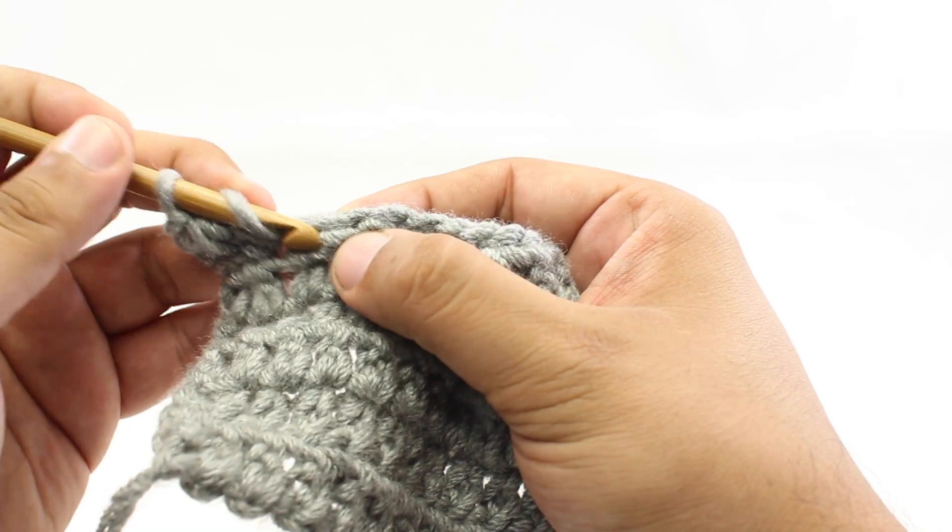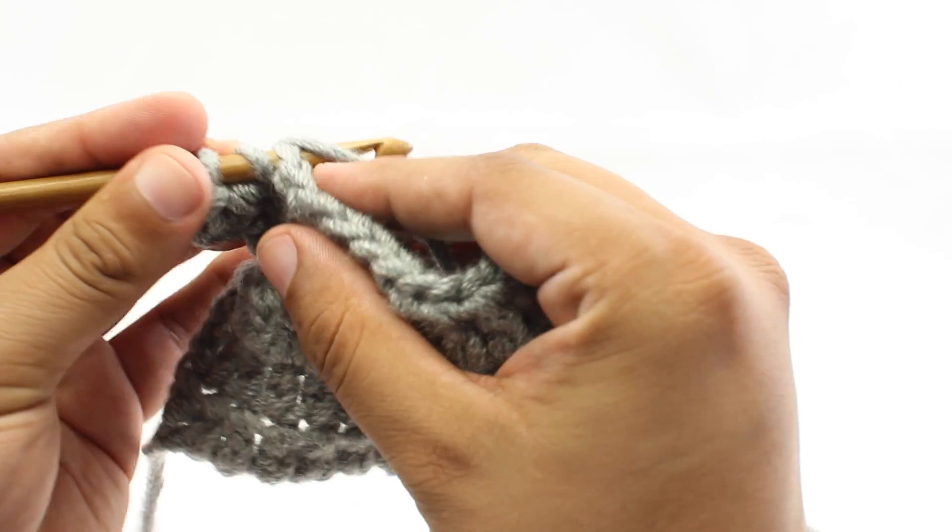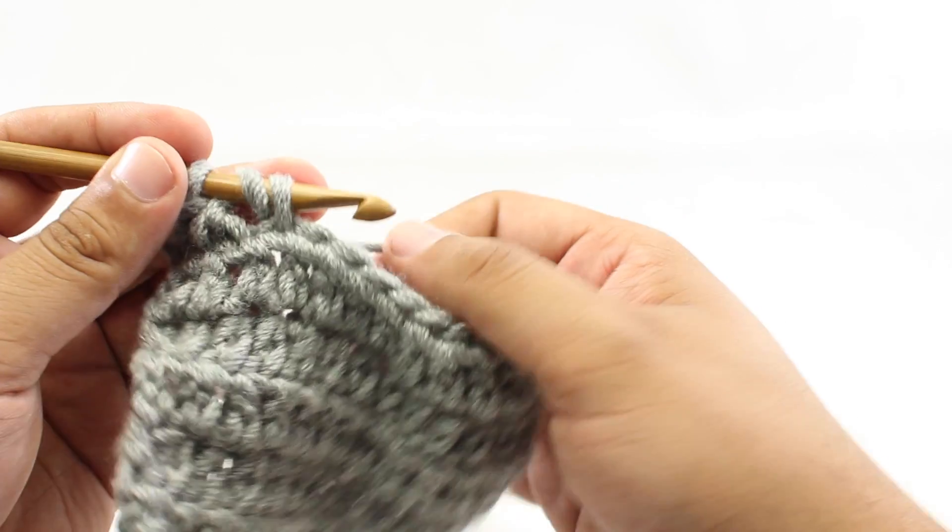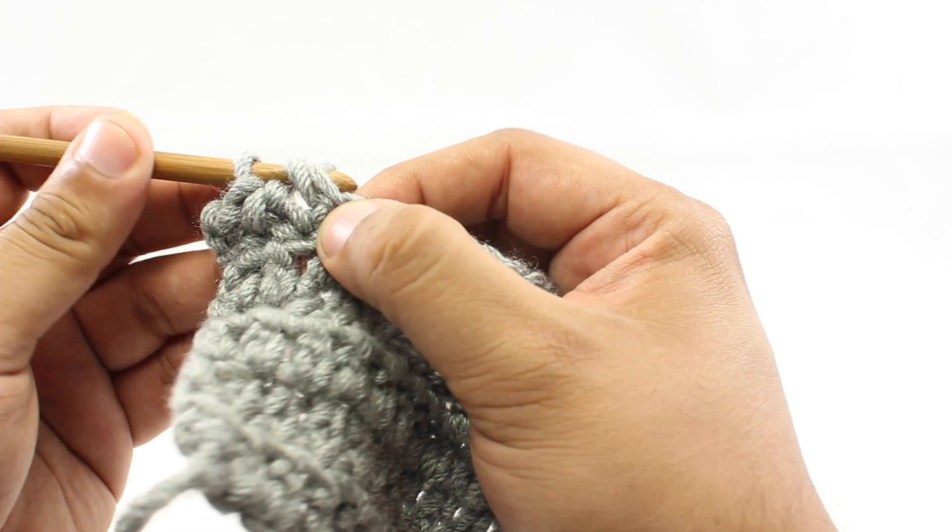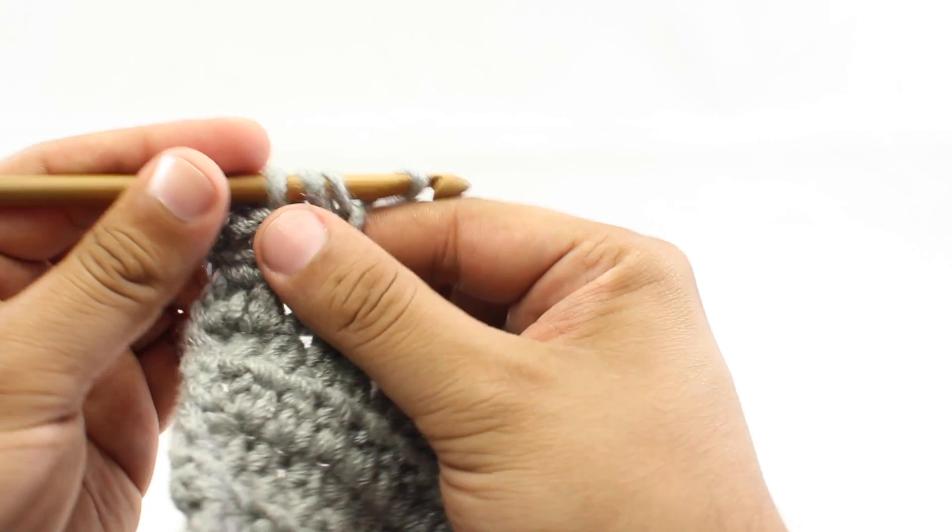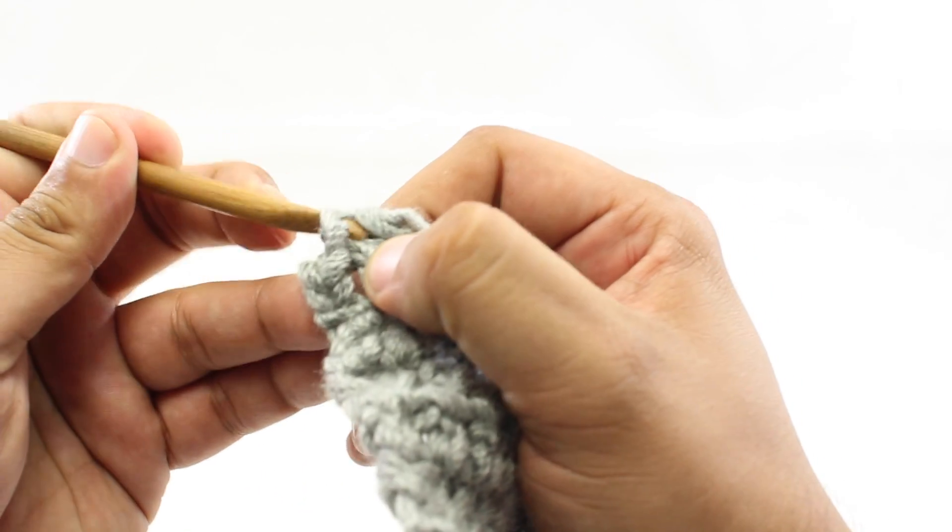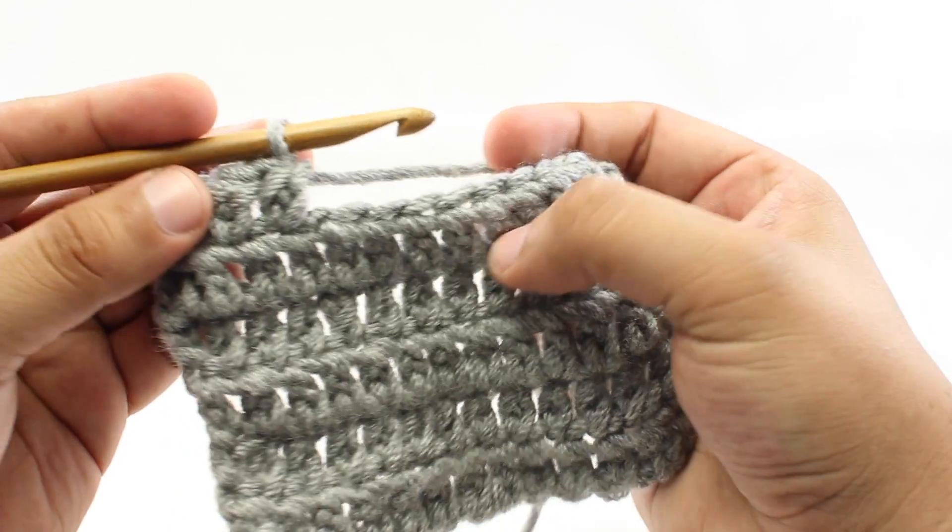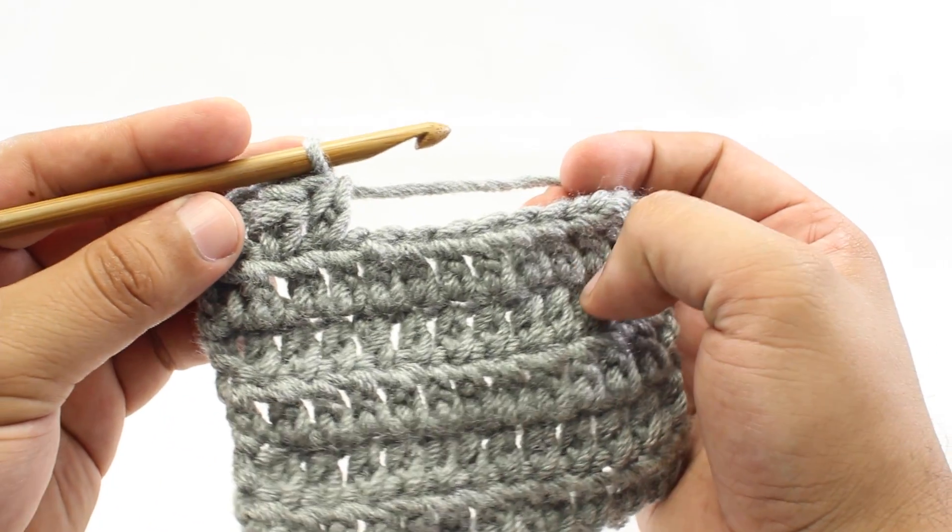We're going to yarn over, insert our hook into the next stitch, yarn over and draw through one loop. That leaves us with 3 loops on our hook. Then we're going to yarn over and draw through just the first loop - we still have 3 loops on our hook. And then we'll yarn over and go through all 3 loops together. That's how we do the extended half-double crochet stitch.